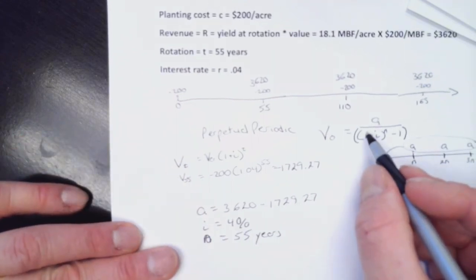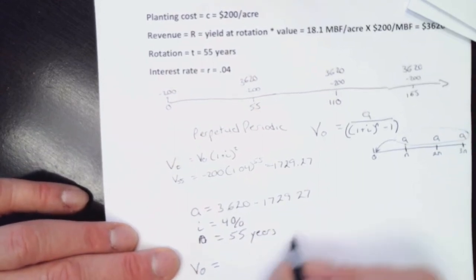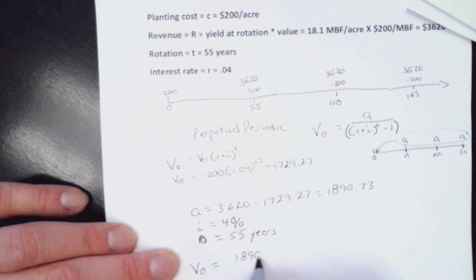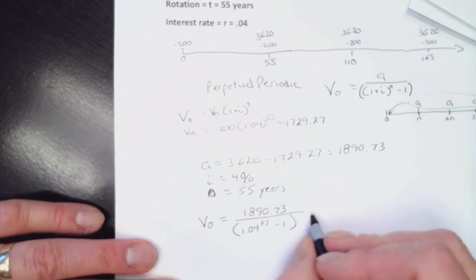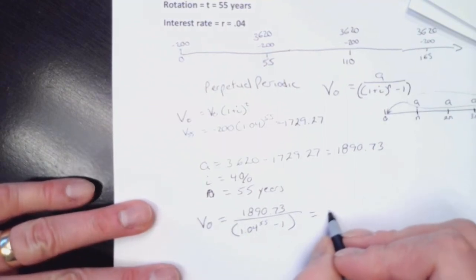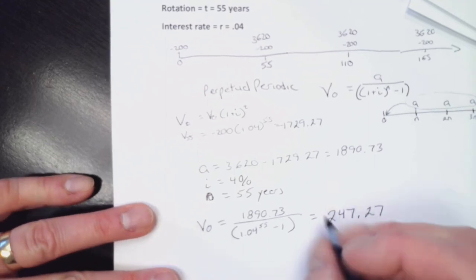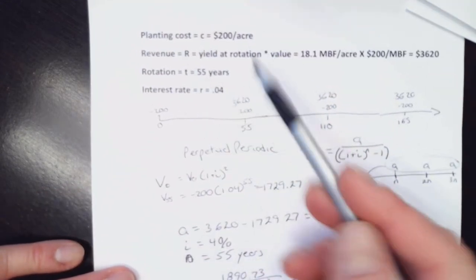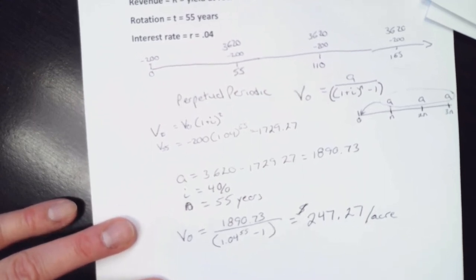And I can turn around and plug them into my equation. My V0 equals 36 minus 17, right? That, let's just put it here. That's $1,890.73. So to make it easy, $1,890.73 over 1.04 to the 55 minus 1. See how I got my brackets on there in the right place. And what does that equal? That equals $247.27. And then the last thing on it is to do the units. And that is dollars per acre. So under this management regime, right, this set of payments, I would be willing to pay up to $247.27 an acre.